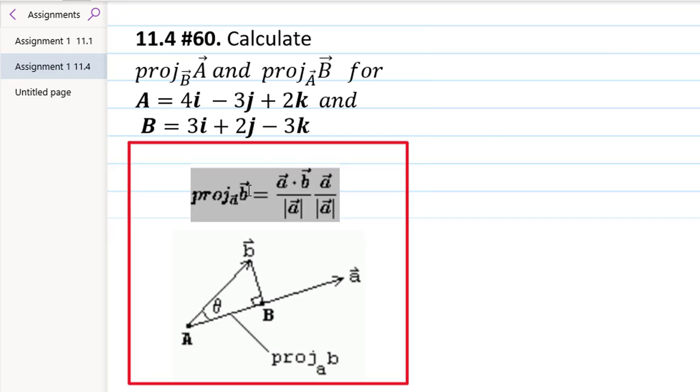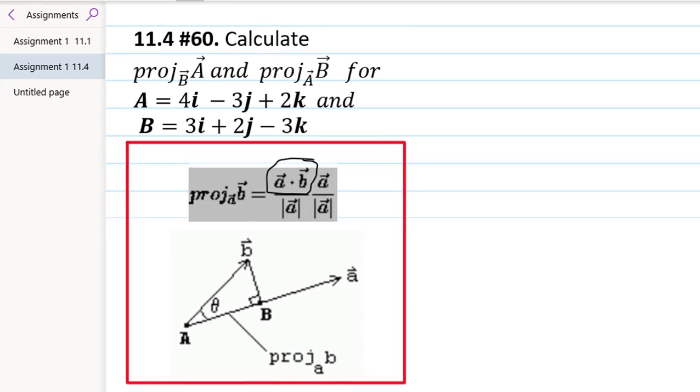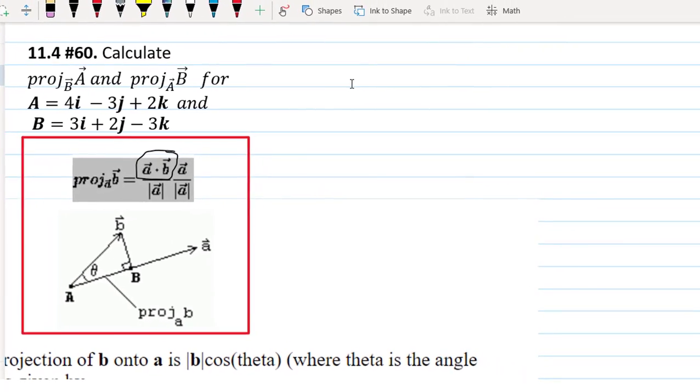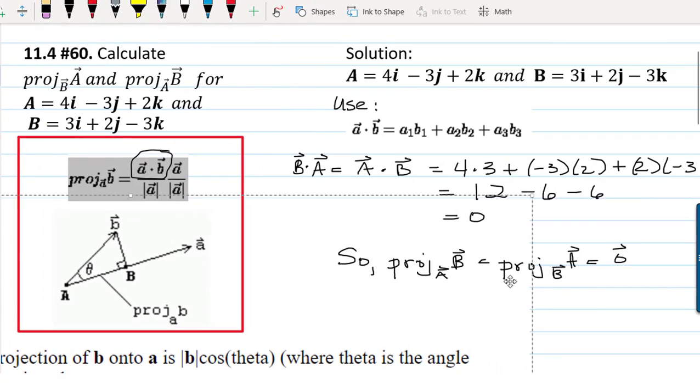Now, the projection involves the calculation of the dot product, and so we always start by calculating the dot product first. So, in this case, look what happens when we find B dot A or A dot B. We're going to get zero.